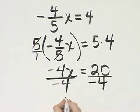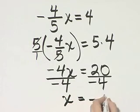These divide out, and I have 1x, or simply x, is negative 5. I have solved.